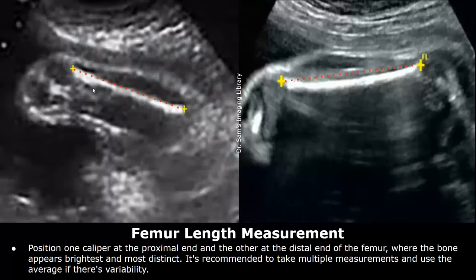Place one caliper at the proximal end of the femur and the other caliper at the distal end to measure the femur length. You can take multiple measurements and average them if you get different values.